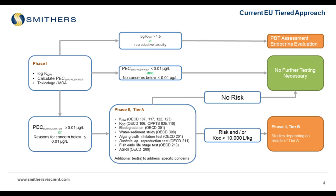If, based on the data generated at phase two, most especially from the OECD-106 adsorption-desorption study, the adsorption constant is greater than 10,000, it triggers a phase two tier B. The studies performed at tier 2B are dependent on the results of the tier 2A study. There is one other thing to look at: the partition coefficient of the drug. If the KOW, which is the octanol water partition coefficient, is greater than 4.5, that triggers a PBT assessment — persistence, bioaccumulation, and toxicity. How that assessment is done is not covered in the EMA guidance today; we refer to REACH, the European Union chemical legislation. Additionally, if a drug is not designed to affect reproduction but there are indications of reproductive toxicity, we have to look at the endocrine mode of action and perhaps recommend other studies. If the exposure concentration is below 0.01 and there are no other concerns, the assessment can stop at that level.